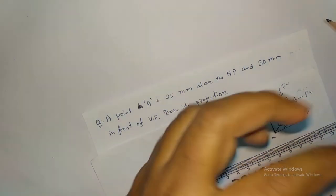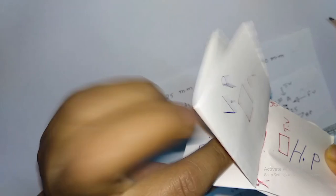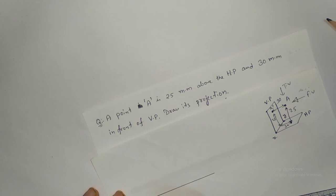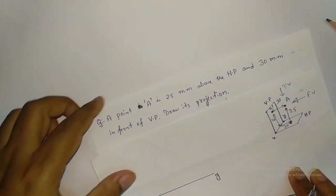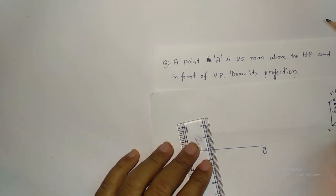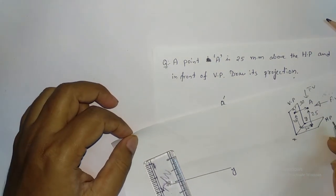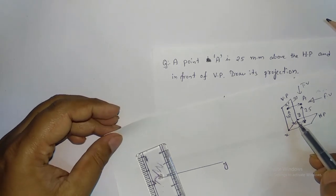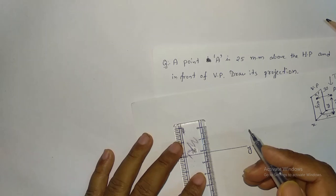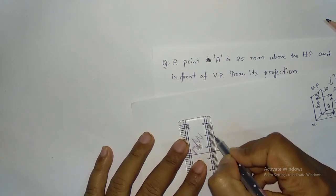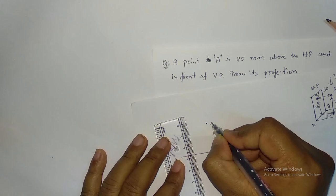To draw this, first you draw the reference line XY, because when you rotate the HP 90 degrees, the top view comes to the bottom. Draw the reference line XY, then mark A-dash 25mm above XY.